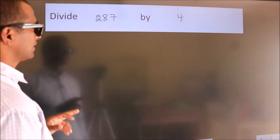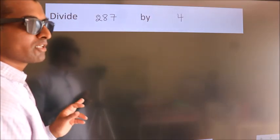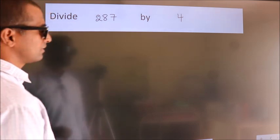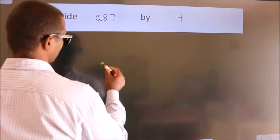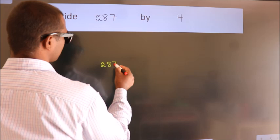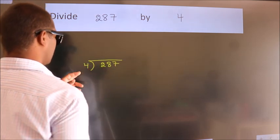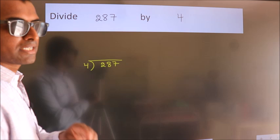Divide 287 by 4. To do this division, we should frame it in this way. 287 here, 4 here. This is your step 1.